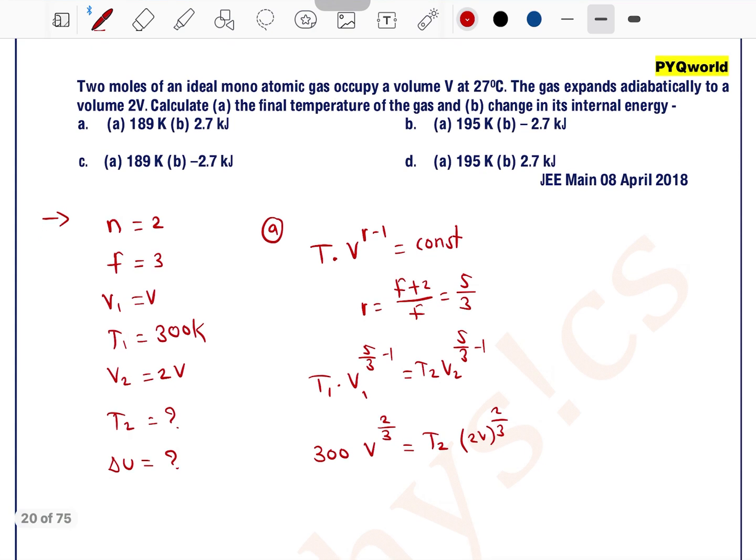So 2V to the power 2 by 3. V to the power 2 by 3 will get cancelled out, so this will be T2 into 2 to the power 2 by 3 is equal to 300.